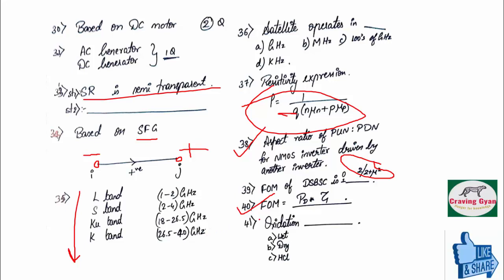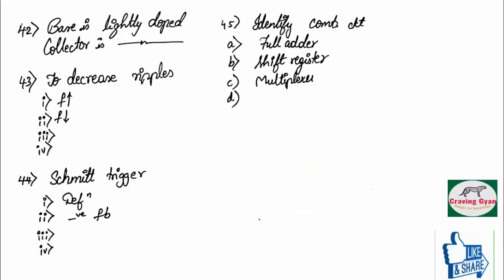And forty-first question was based on oxidation. Which oxidation is good? Wet oxidation, dry oxidation, hydrochloric oxidation. Forty-second question was based on base and collector of BJT. Which one is likely doped?